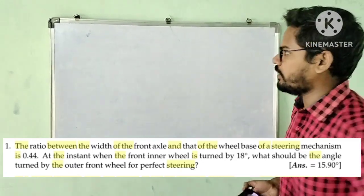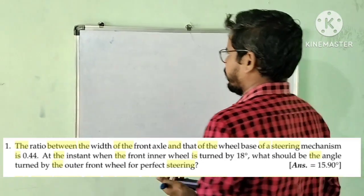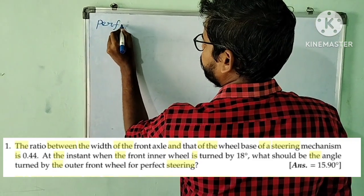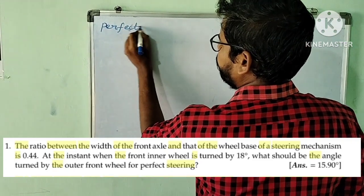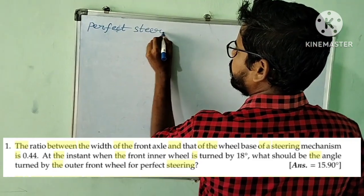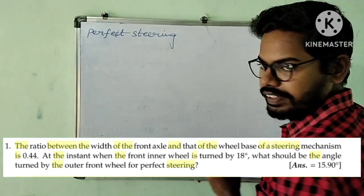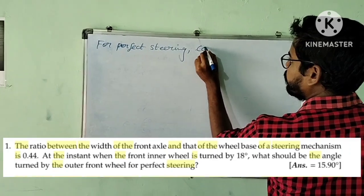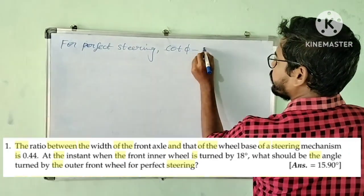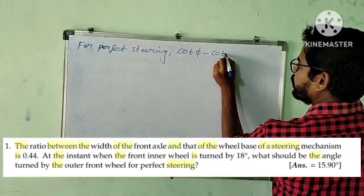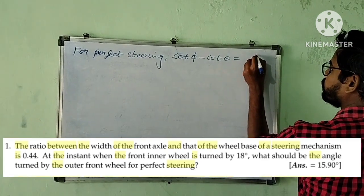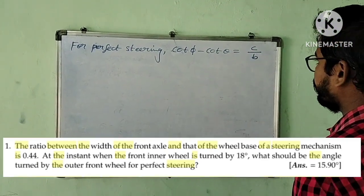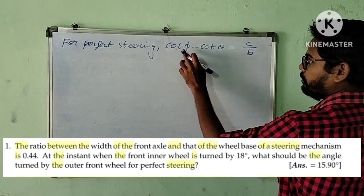In general, in steering mechanism, we have a formula for perfect steering or correct steering: cot φ minus cot θ is equal to C by B.